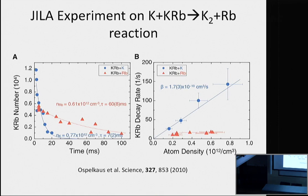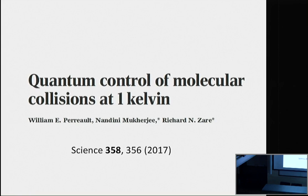I'm sure almost everyone has seen this. This is the decay of KRb molecules as a function of time with collision partners potassium and rubidium. The rapid decay when potassium is the collision partner has been attributed to a chemical reaction K + KRb leading to K2 + Rb. Based on that, a rate constant of about 2 × 10⁻¹⁰ cm³/s was extracted, which is a fairly rapid rate for a chemical reaction at a temperature on the order of a few hundred nanokelvin.